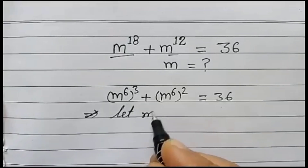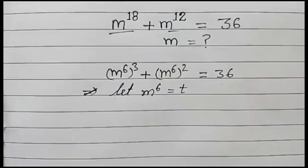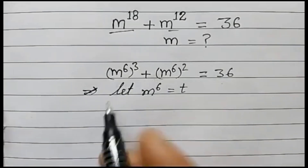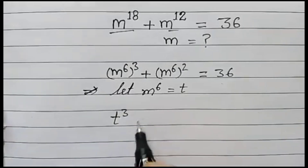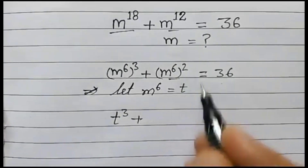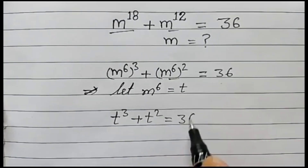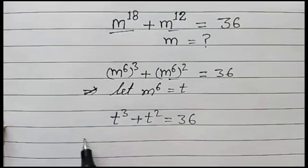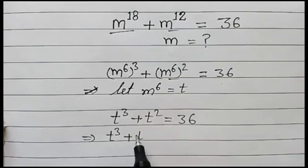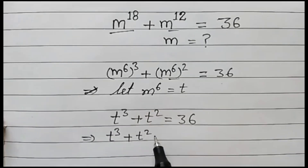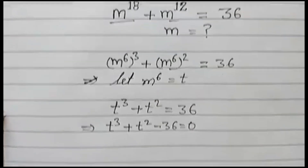Let m to the power 6 be equal to t. So this equation will change to t cubed plus t squared is equal to 36, or t cubed plus t squared minus 36 is equal to 0.